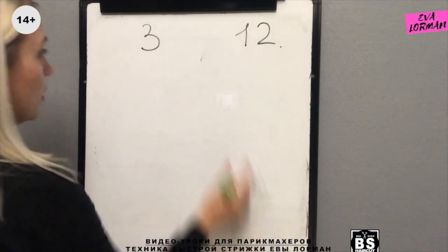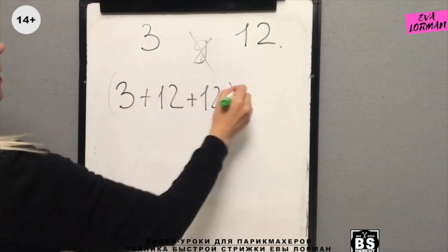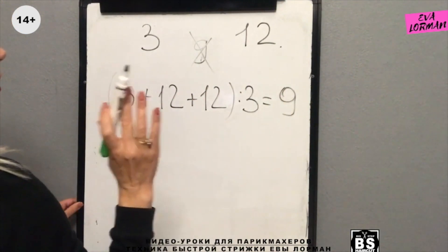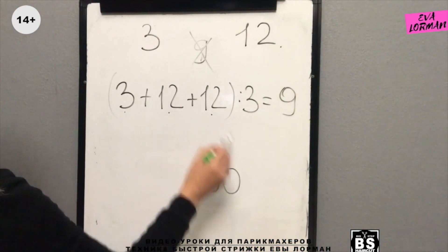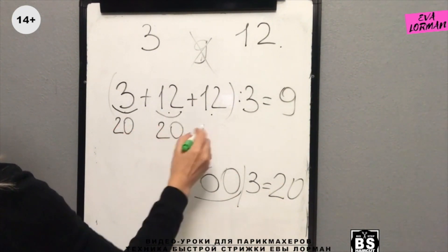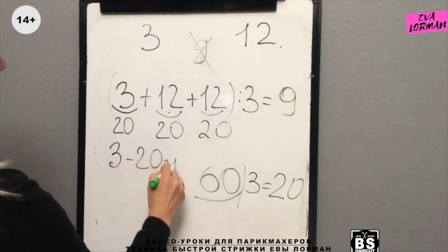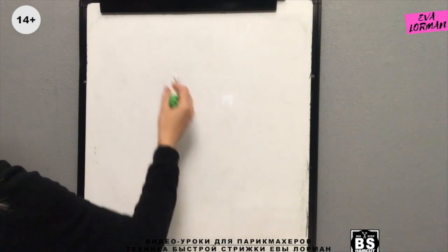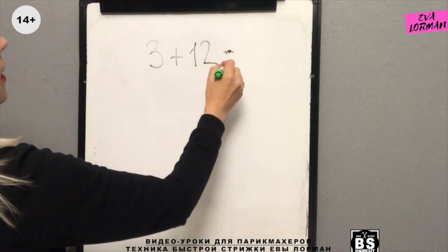Next example: we need 9% oxides. The formula is: 3% plus 12% plus 12%, divide by 3 and get 9%. If we need 60 grams of oxide, we take 60 divided by 3 — that gives 20 grams per part. So: 20 grams of 3% plus 40 grams of 12%.